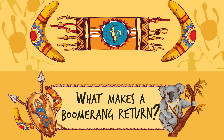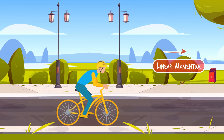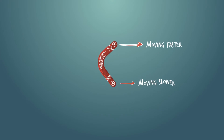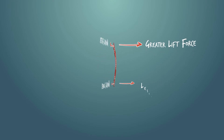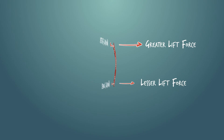To find out what makes boomerangs return, let's look back at the bike, which had both linear momentum and angular momentum. In the same way, a thrown boomerang has linear momentum as it moves forward and angular momentum as it spins. Because of the spin, the top portion of the boomerang is actually moving faster than the bottom portion. Because of this difference in velocity, the top portion generates a greater lift force than the bottom portion. Lift is what keeps the boomerang in the air — the same thing that airplane wings generate to keep airplanes flying.